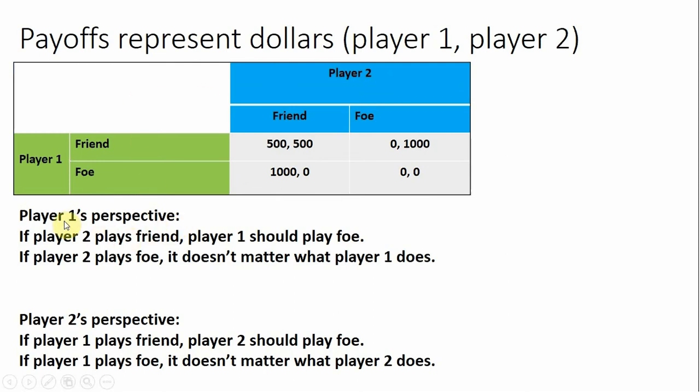From player one's perspective, if player two plays friend, what's the best thing for player one to do? Well, the strategy would be to play foe. You'd get the most money. $1,000 beats $500. So if you're player one and you think player two is going to play friend, your highest payoff goes to the strategy that is based on foe.